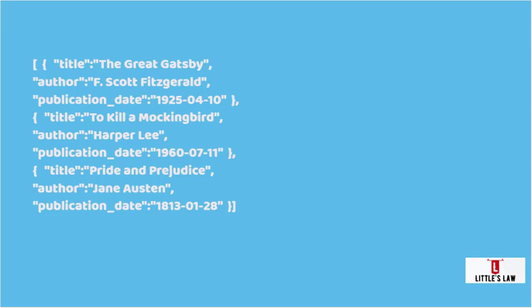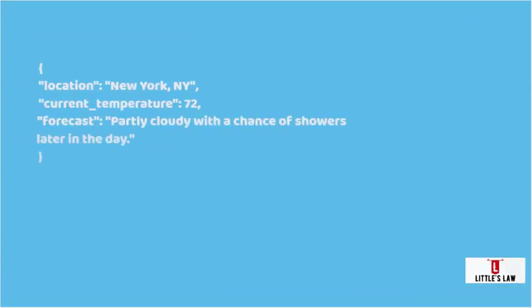In the weather example, the data is an object with three properties: location, current temperature, and forecast. The location property holds the city and state information as a string, while the current temperature holds the temperature in degrees Fahrenheit as a number, and the forecast property holds a text description. A client such as a mobile app or browser can send a request to the server to retrieve this data, which can then be easily parsed and used to display current weather information. JSON provides a simple and efficient way to transmit this information between the server and the client.